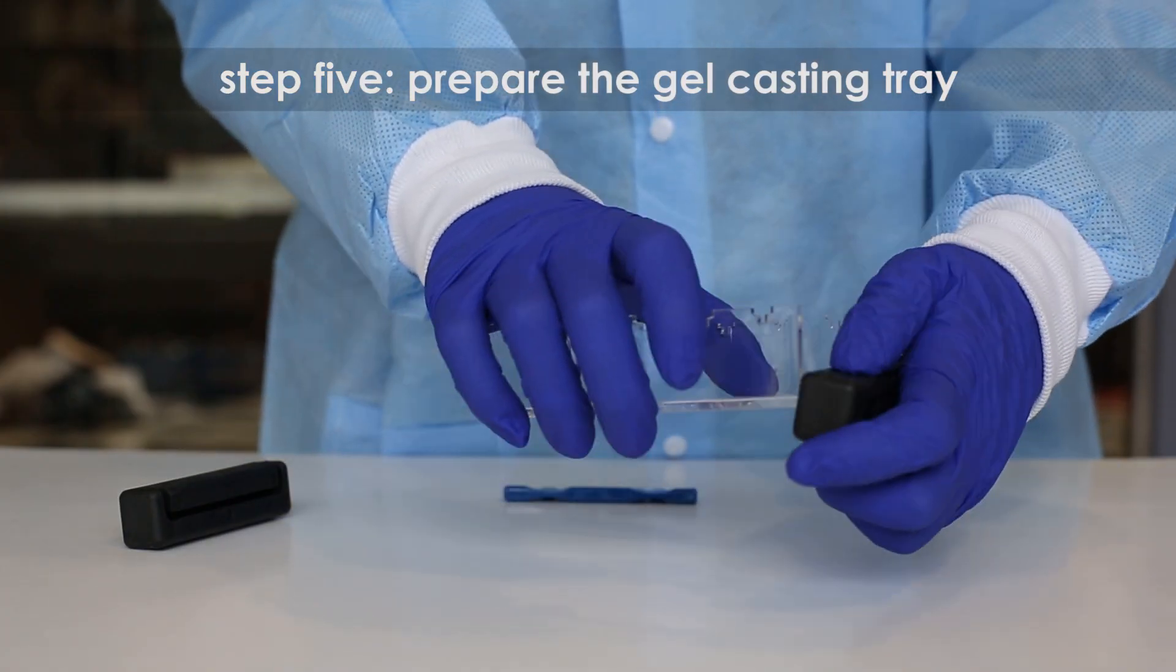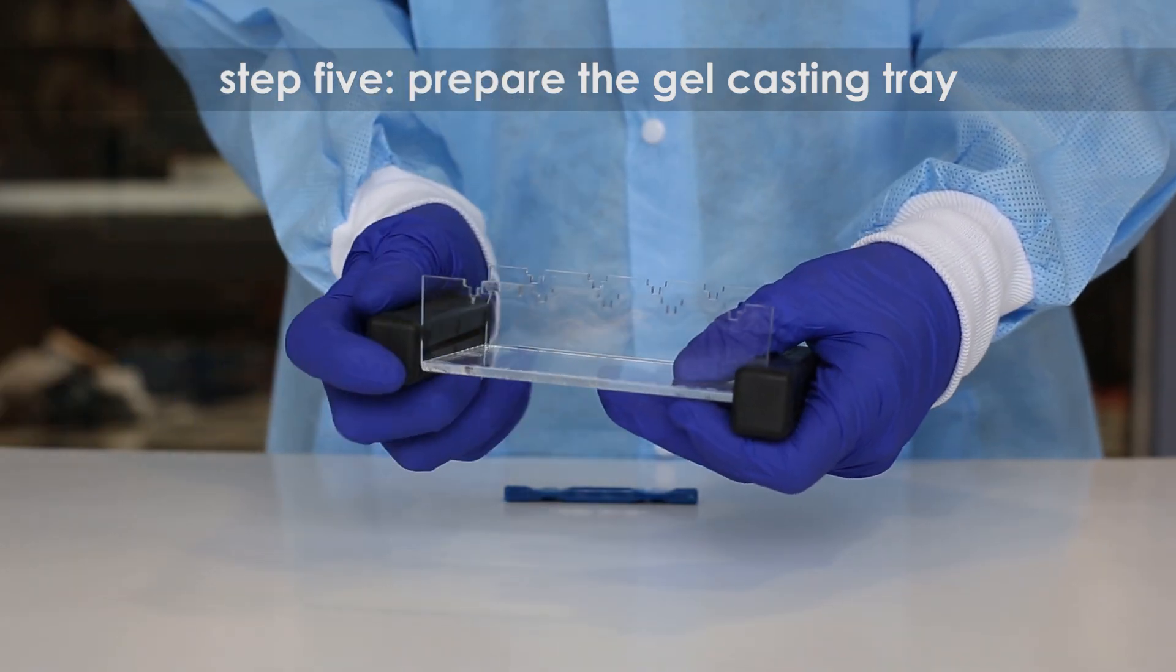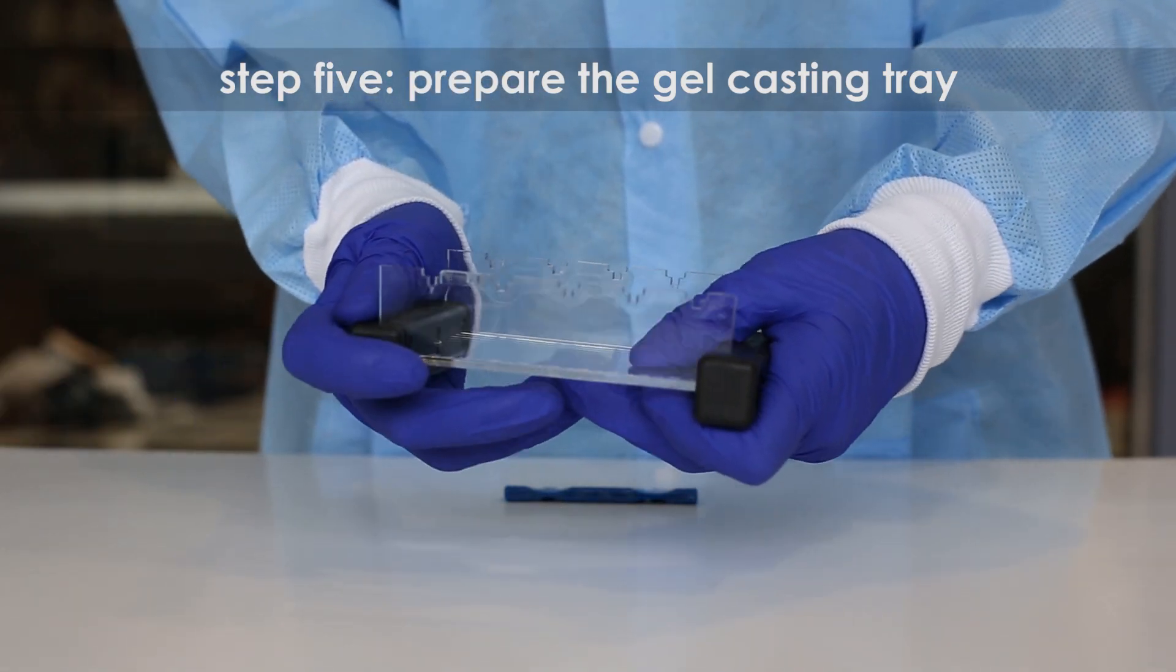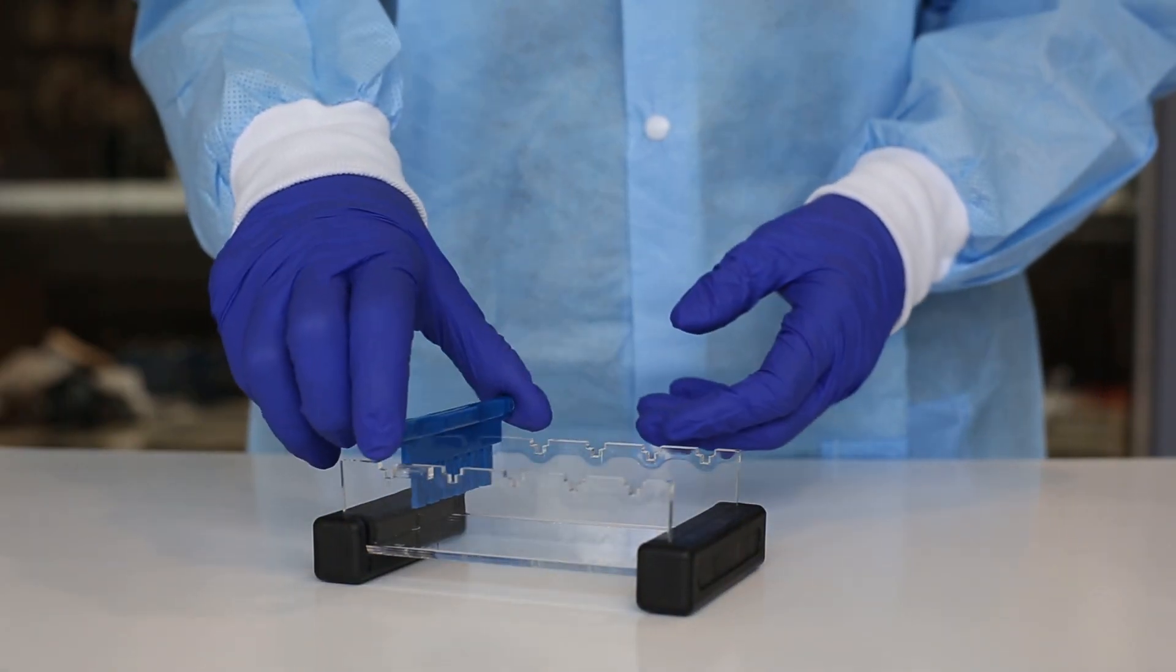Step 5. While the Agarose is cooling, seal the ends of the gel casting tray with the rubber end caps. Place the well template in the appropriate notch.